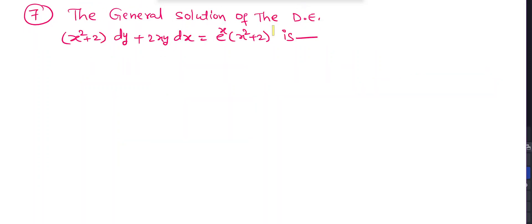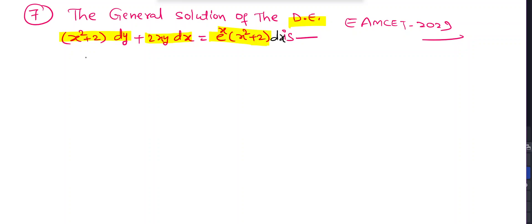This is the seventh question. The general solution of (x² + 2)dy + 2xy dx = eˣ(x² + 2). This is an M-set 2023 question. Dividing by (x² + 2): dy/dx + (2x/(x² + 2))·y = eˣ. This is a linear DE with P = 2x/(x² + 2) and Q = eˣ.